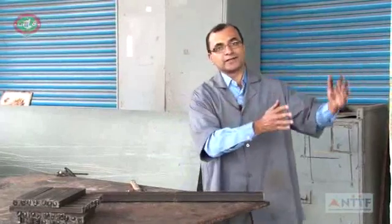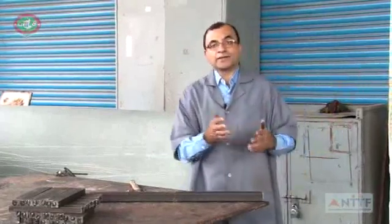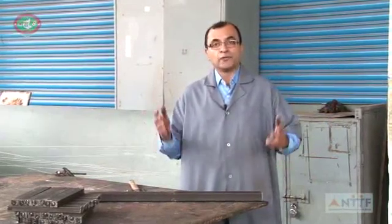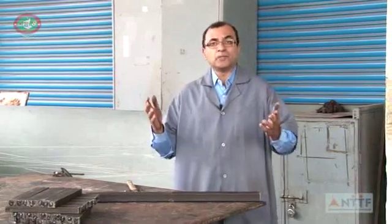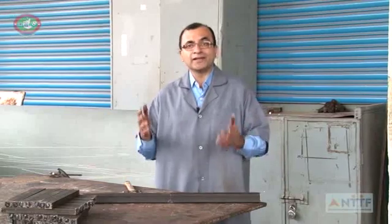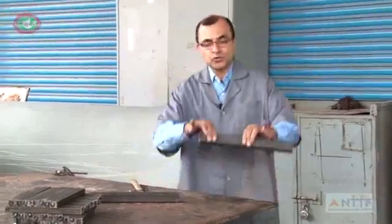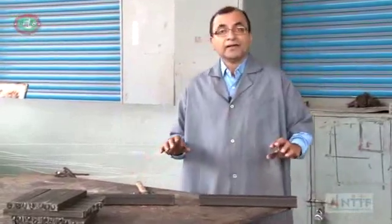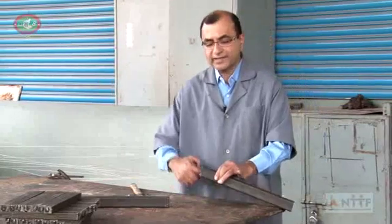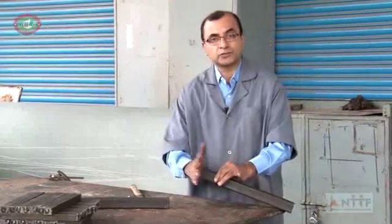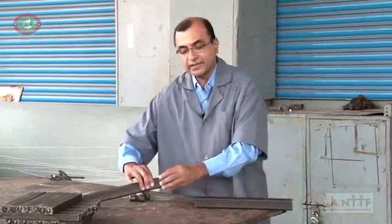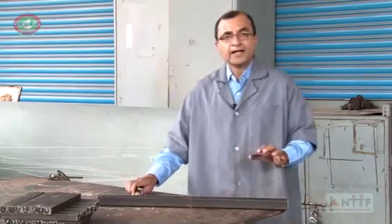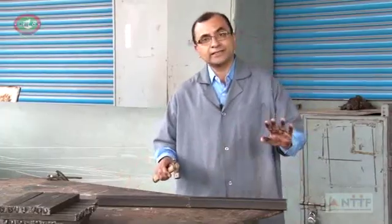I'm going to take you back to the industrial revolution, the year 1750, where a very primitive form of welding called forge welding was used. I have two components to be welded. In the forge welding process, they used to heat the entire area where welding had to take place on both components, then bring them close and hammer continuously so that it fuses.